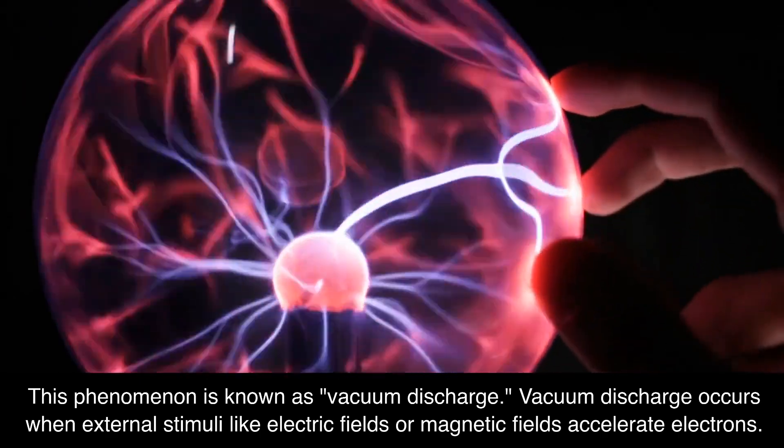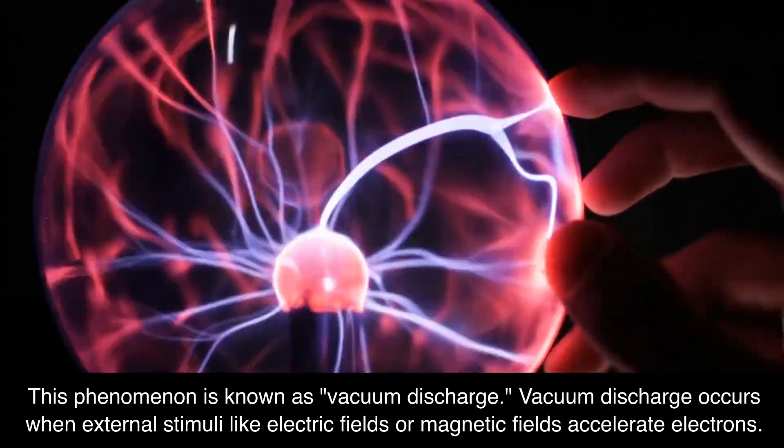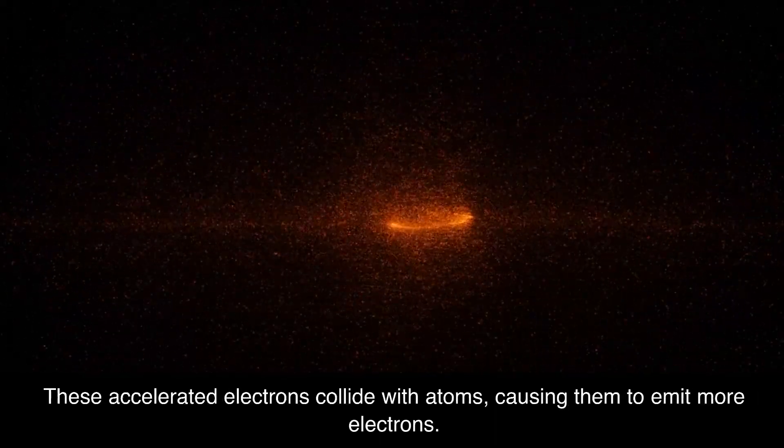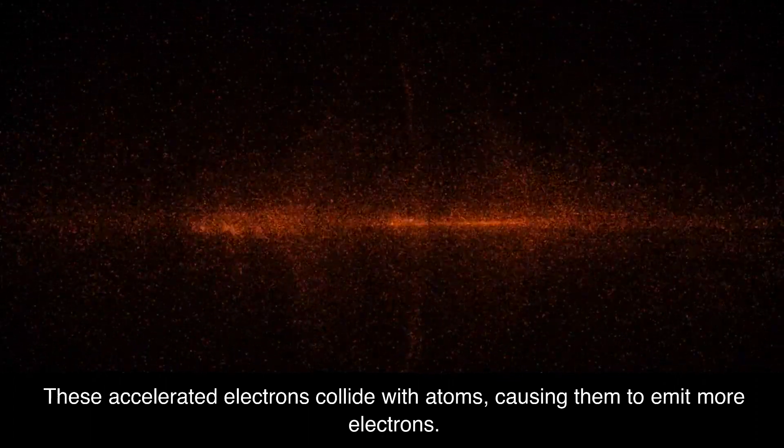Vacuum discharge occurs when external stimuli like electric fields or magnetic fields accelerate electrons. These accelerated electrons collide with atoms, causing them to emit more electrons.